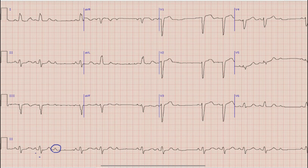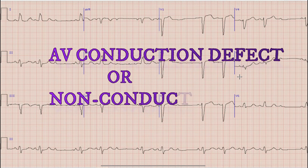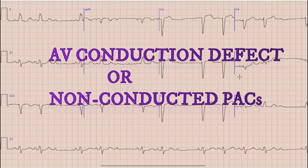Whenever you find this type of pattern where a P wave is not being conducted, there could be two possibilities: either there is an atrioventricular conduction defect, or there may be premature atrial contractions which are not conducted to the ventricles — which are called non-conducted PACs.